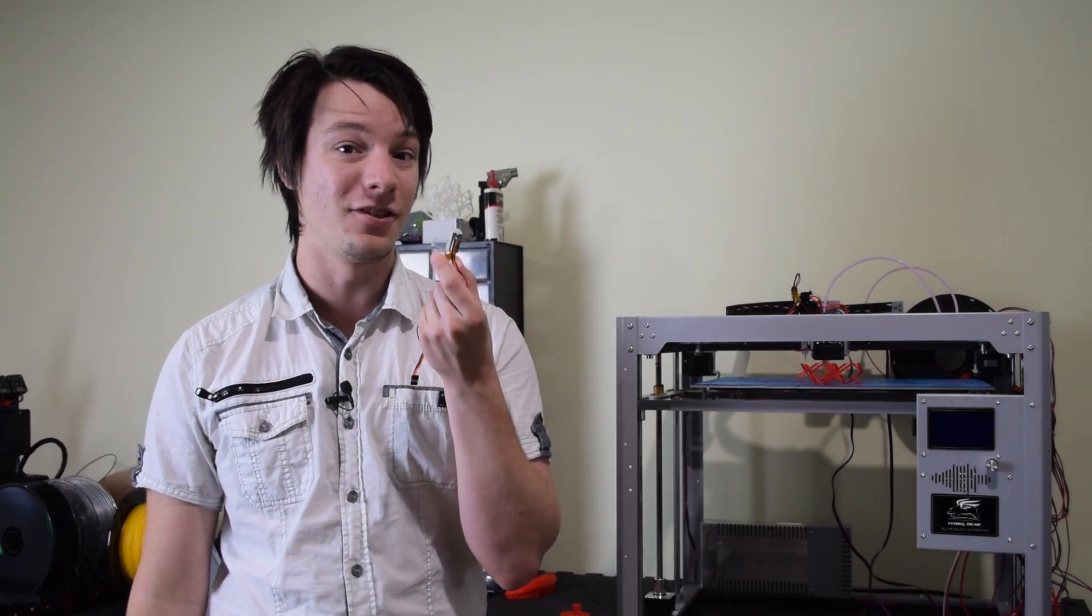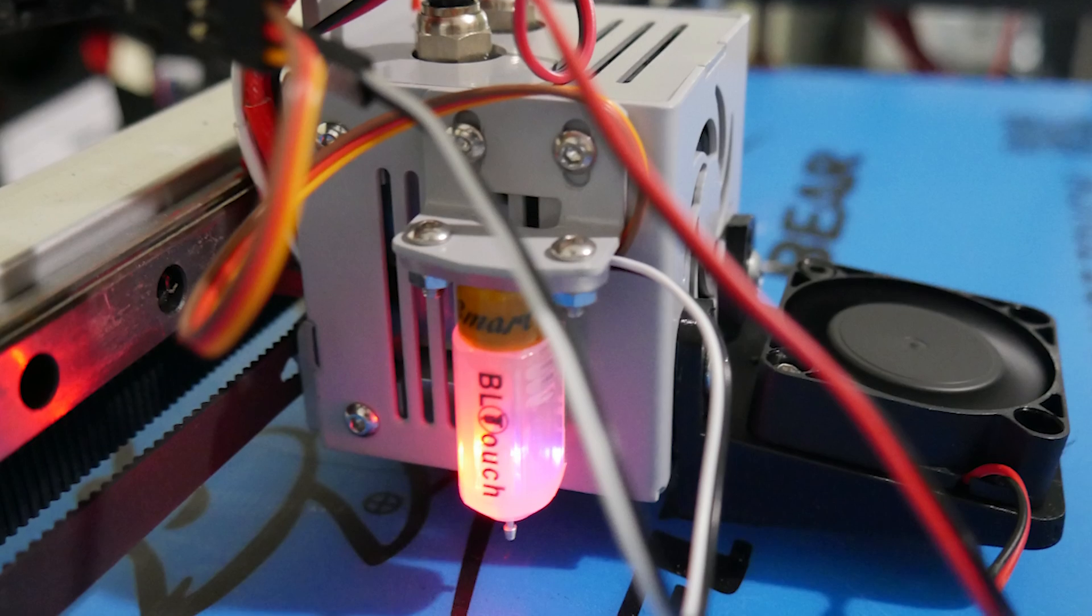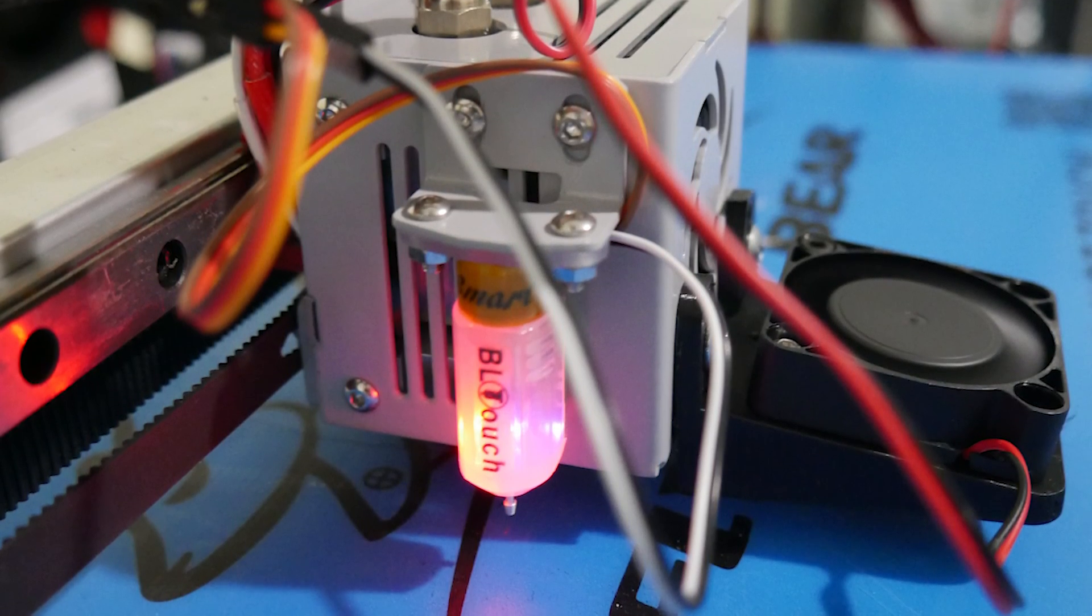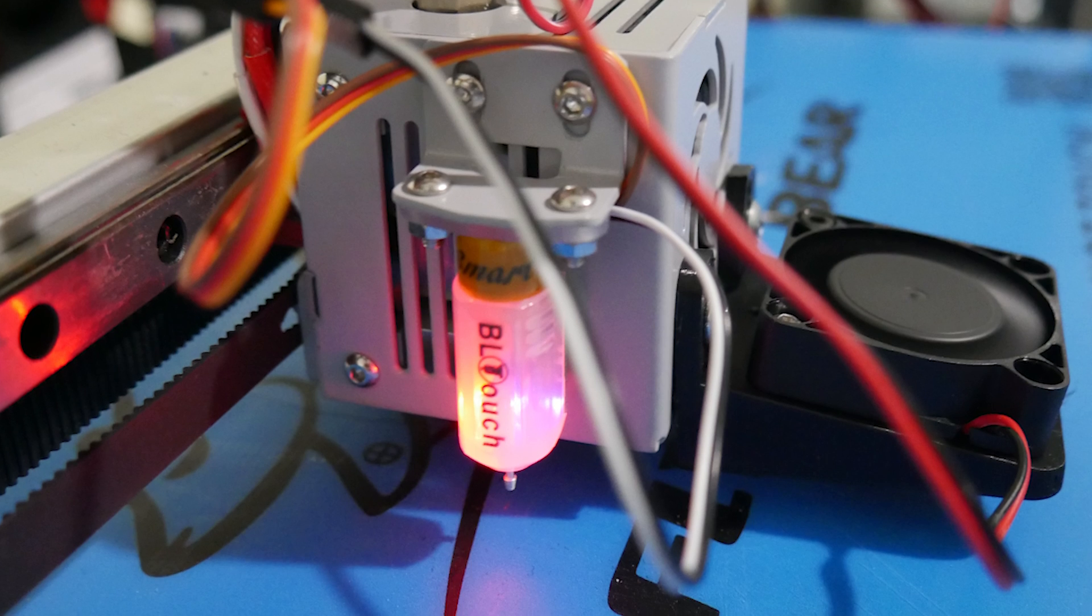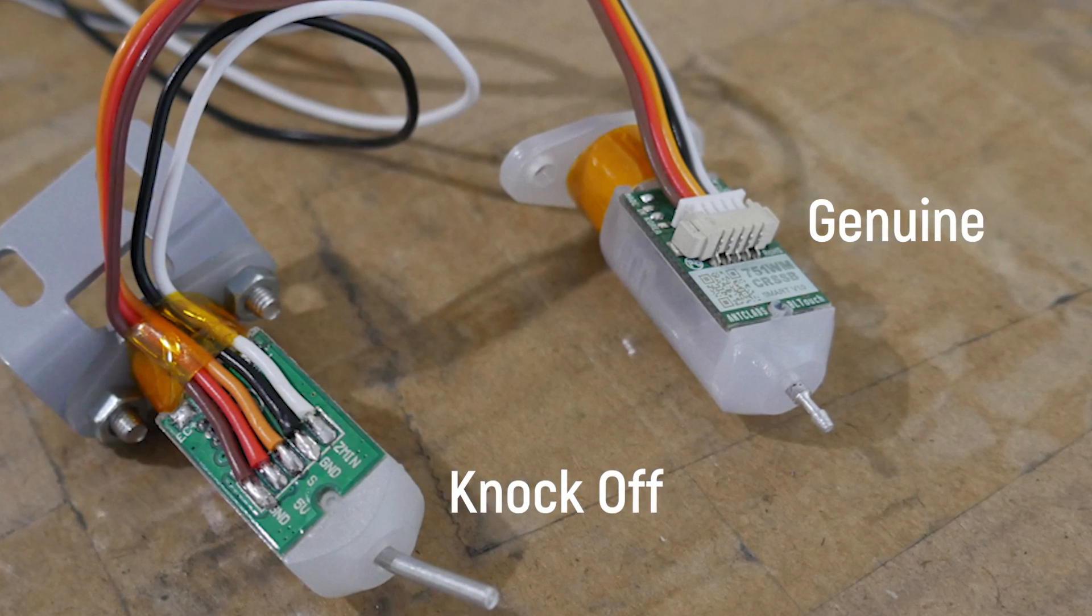But on closer inspection, I wasn't too sad. It turns out this is not a genuine BL Touch. It's instead simply inspired by Ant Lab's knockoff. So luckily, I had a proper BL Touch that Paris gave to me in person when I met her at the Bay Area Maker Faire. So I put that in place, and so far, it's done a good job at auto level and not dropping mid-print. It's interesting that you can really tell the difference between the knockoff and the real-deal hardware, and this seems to be a theme for this machine in general.